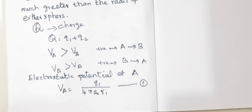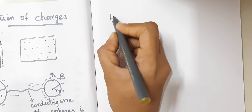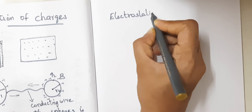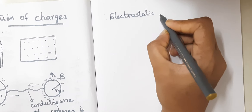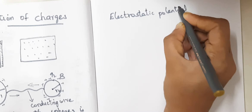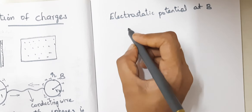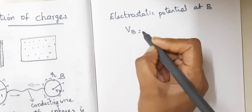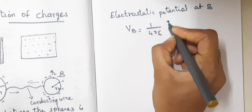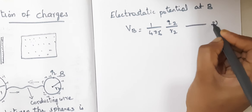Similarly, we can write the electrostatic potential at the surface of sphere B: Vb = (1 / 4πε₀) × (Q2 / r2). This is equation 2.